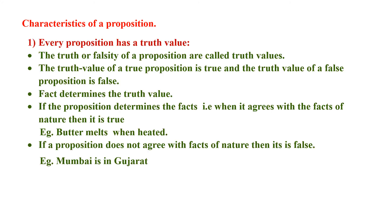Now we will understand the characteristics of a proposition. First, every proposition has a truth value. The truth or falsity of a proposition are called its truth values — a proposition is either true or false. The truth value of a true proposition is true and of a false proposition is false. The facts of nature determine the truth value. If the proposition agrees with the facts of nature, then it is true; if it does not agree, then it is false.